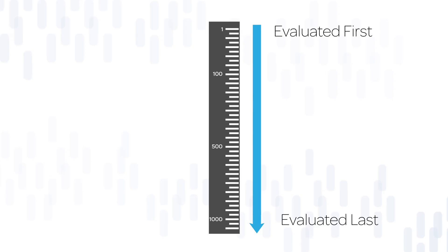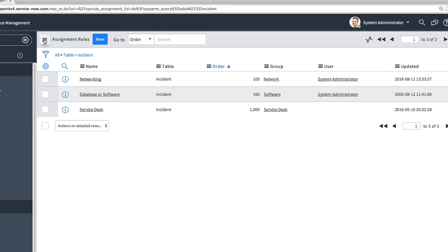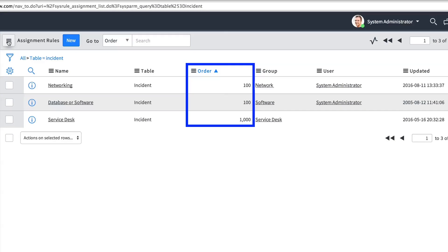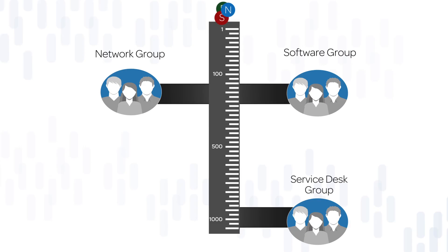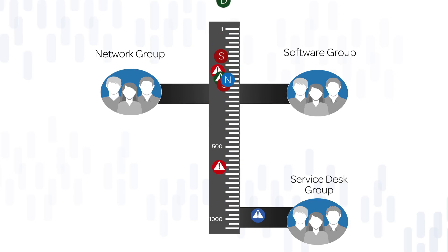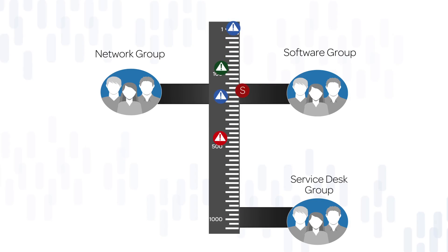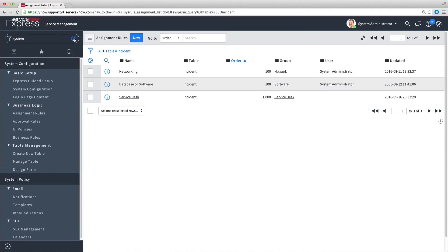The first rule that matches the conditions gets executed, and the remaining ones are ignored. The Networking and Database or Software Assignment Rules both have an order number of 100, and the Service Desk Assignment Rule has an order number of 1000. So the Networking and Database or Software Assignment Rules are evaluated before the Service Desk Assignment Rule, meaning the Service Desk Rule is only processed against new incidents that were not assigned by one of the other assignment rules.